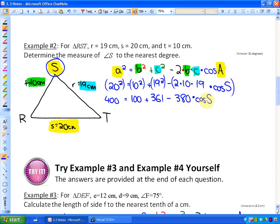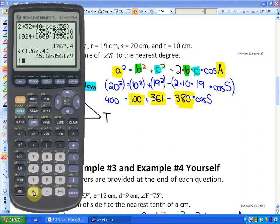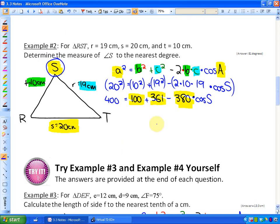Now we're going to put this in simplest form. One of the most typical errors is that people are tempted to collect these as being like terms. So they do 100 plus 361 minus 380, and they make this 81 cos S. That isn't the case. Because these aren't like terms, the cos S term is not like the two constant terms. So if I want to simplify the right-hand side, I'd combine these two. So I have 400 is equivalent to 461 minus 380 times cos S, and that is the simplest form.